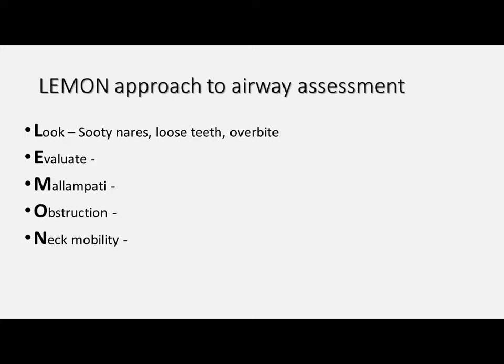At a quick first glance we've already identified a few potential impediments to intubation with Millie. Now we'll move on to assess the dimensions of Millie's airway so that we can gauge an idea of the angles we'll have to negotiate as well as the physical space available during laryngoscopy. We use the 3-3-2 rule to do this.